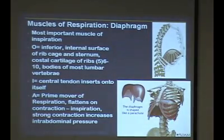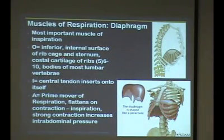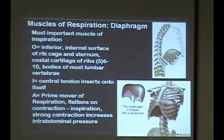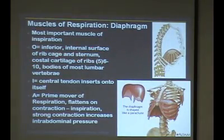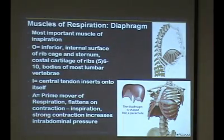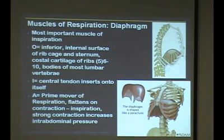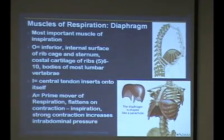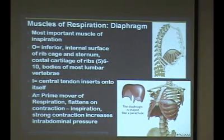The origin of the diaphragm runs all the way around the outside edge — the inferior aspects of the ribcage and sternum, the costal cartilage, the ribs, and the bodies of the lumbar vertebrae. Essentially the entire perimeter is the origin, and then it inserts onto itself — onto the central tendon up in the middle.